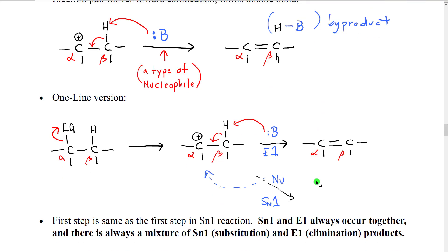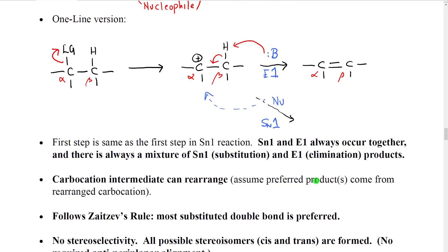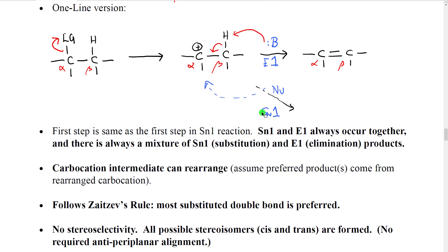This is a multi-step reaction. We can write it in a one-line version where in the first step with the first arrow, the leaving group leaves. Then in the second step, we have a base that removes the hydrogen and makes the double bond.